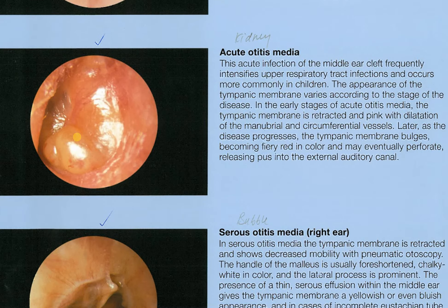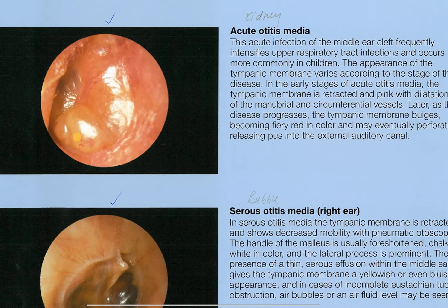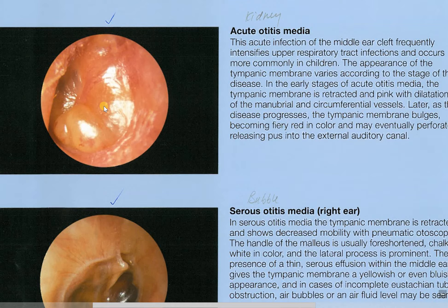Here's a common one: acute otitis media. This is what an infection can look like. There are different things that can cause the infection. Right here we're having a bulge of the tympanic membrane — you can see it bulging towards you. That's pressure trying to get out and the eardrum is bulging. I like to go in there and correct the pressure by opening up the tubes and the things we've talked about on prior slides.